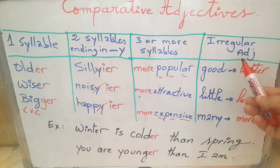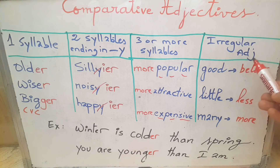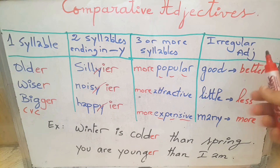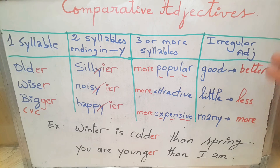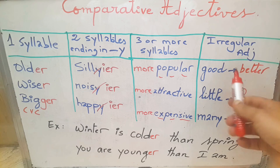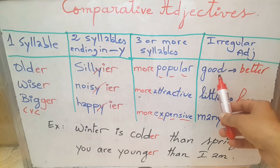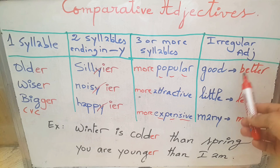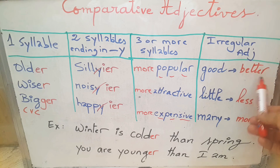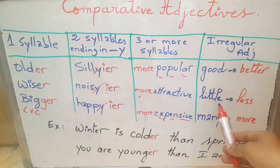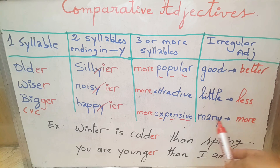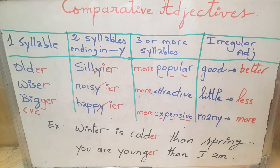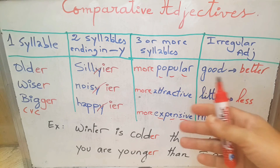However, there are some irregular adjectives — adjectives which change completely. For example, good: we cannot say gooder or more good, but we say better. Little becomes less. Many becomes more.